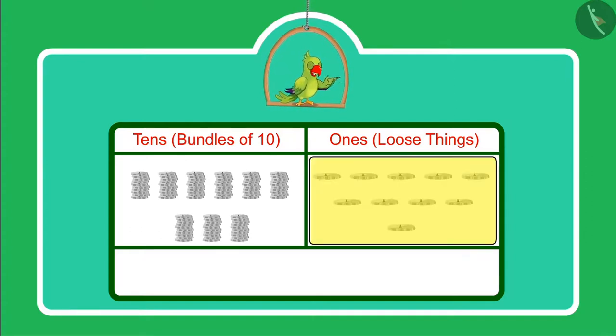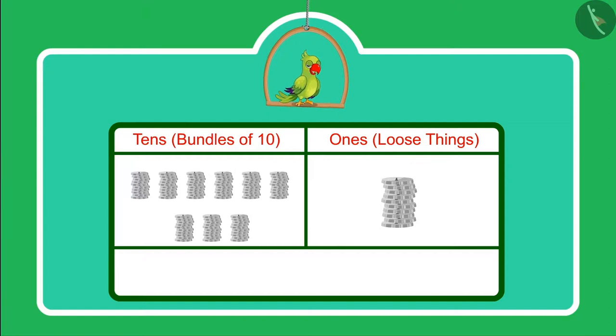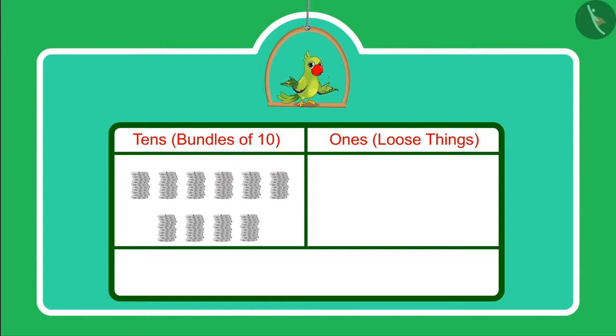And together 10 1s will make 1 10 which means 1 more group of 10. That means earlier we had 9 10s and now 1 10 more. And now we have 10 10s which we call as 100.